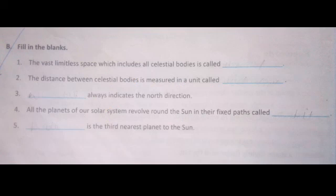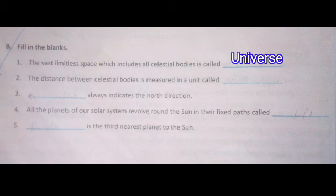Fill in the blanks. One: The first limitless space which includes all celestial bodies is called Universe. Two: The distance between celestial bodies is measured in a unit called Light Year. Three: A dash always indicates the north direction — the answer is Pole Star.